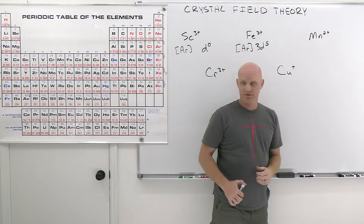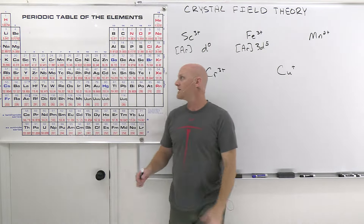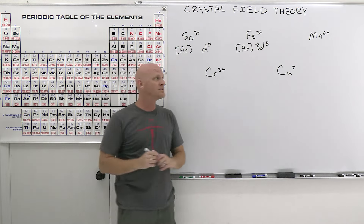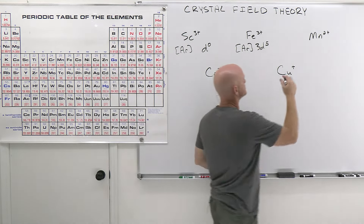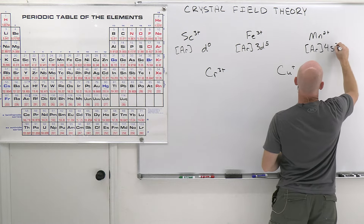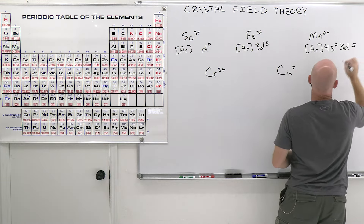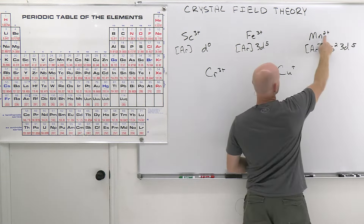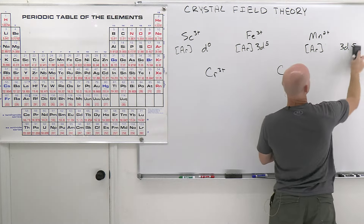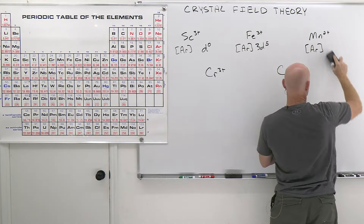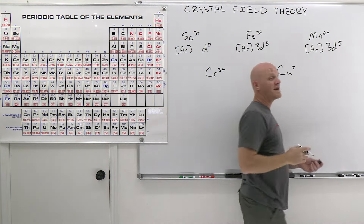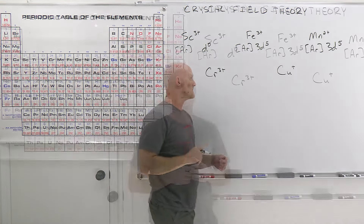For Mn²⁺: manganese is [Ar] 4s² 3d⁵. Losing two electrons means removing the 4s electrons first, leaving [Ar] 3d⁵. Again, 5 d electrons is the key takeaway.